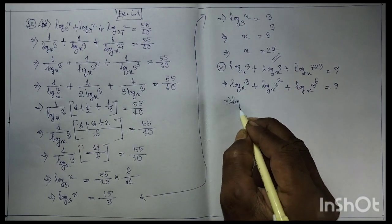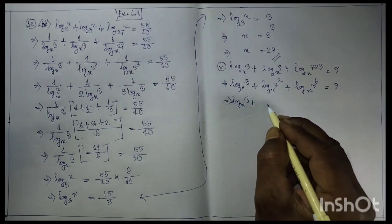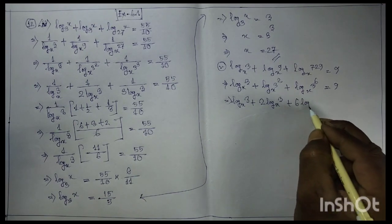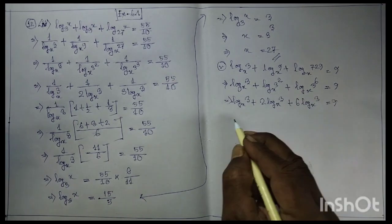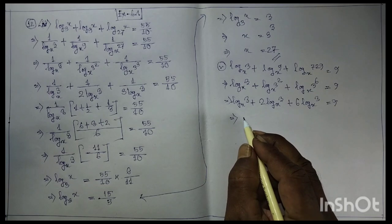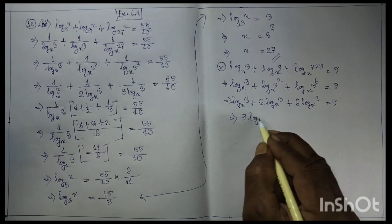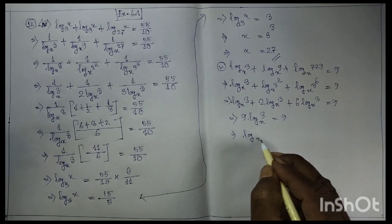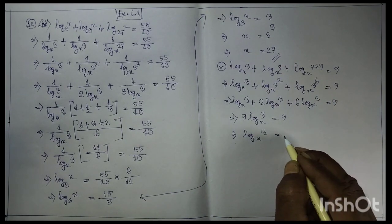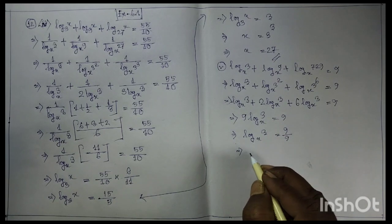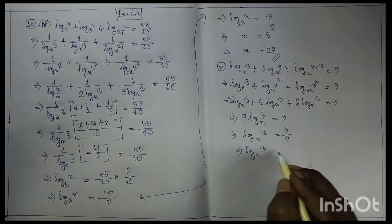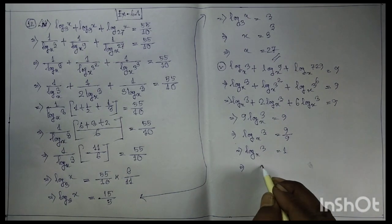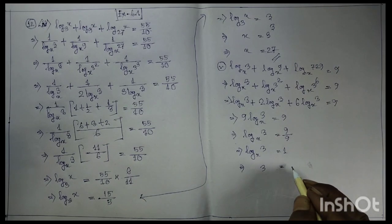Combining terms, log base(3wx) of x plus 6 log base(3wx) of x equals 9. This implies log base(3wx) of x equals 9, so log base(3wx) of x equals 9.